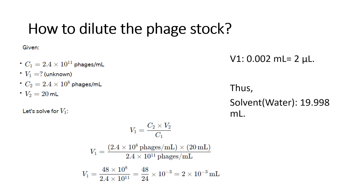Solving the equation, V1 = 2 × 10⁻³ ml, which means we take 2 microliters from the stock solution. The amount of solvent (diluent) to add is 19.998 ml. Mastering this calculation ensures accurate phage quantification for your experiments. If you have any questions, don't hesitate to ask. Thanks!